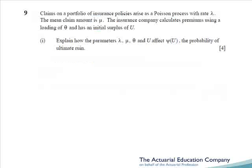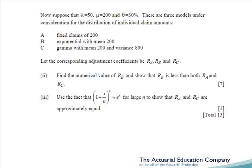Question 9 tests ruin theory from chapter 9 of the notes. This question is extremely similar — some would say nigh on identical — to April 1998 question 14. However, given that this paper is not available from the profession's website, you would only have met it had you attended a revision day with us. In part 1, we have to explain how the parameters affect the probability of ultimate ruin. Notice how the question asks us to explain — simply saying it increases, decreases, or doesn't affect the probability would have only got you half the marks.